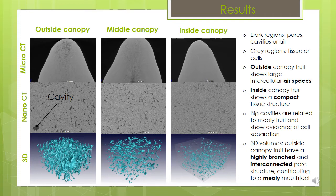These figures illustrate the grey level images of the neck region of an outside, middle, and inside canopy pear respectively. The dark regions represent the cavities while the grey regions indicate tissue or cells. Evidence of large intercellular air spaces between the cells is visible in the outside canopy fruit, while the inside canopy fruit had a compact tissue structure.